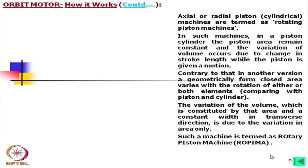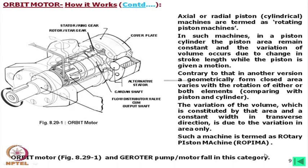Such a machine is termed a rotary piston machine, abbreviated as ropima.